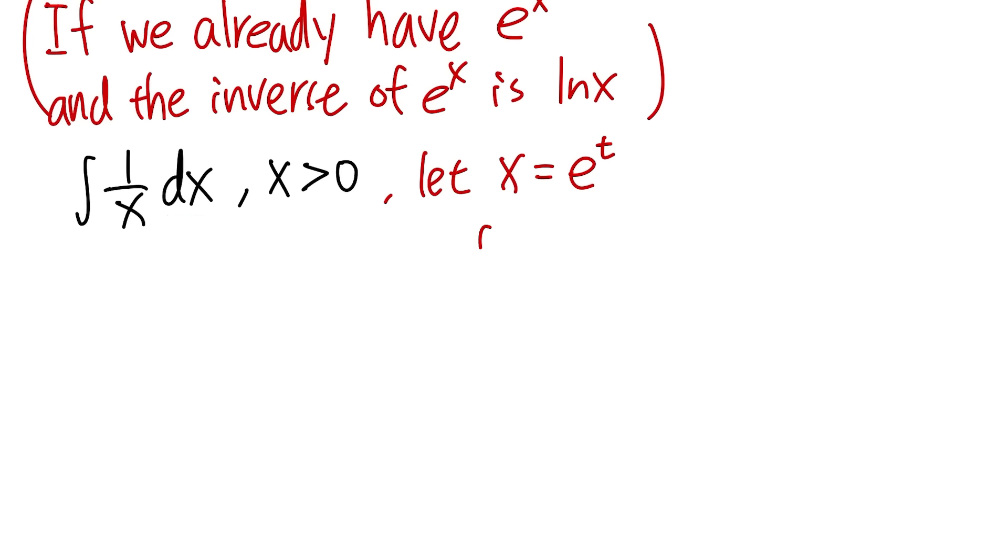So we need to get the dx from this equation as well. And to do so, we just differentiate both sides. And we will get dx equals the derivative of e to the t is just e to the t times dt. And as you can see, the reason that I really have to make x greater than 0 is because e to the t is always positive.